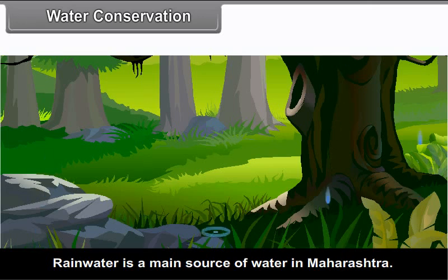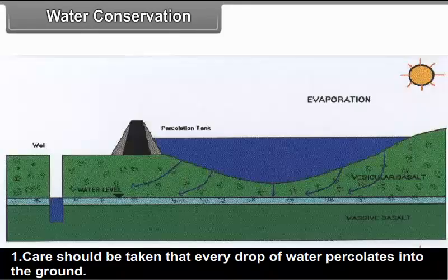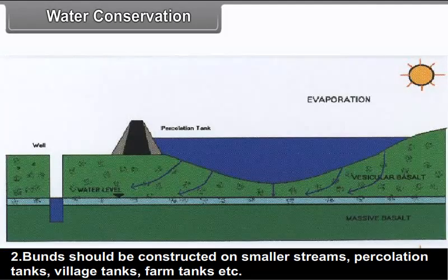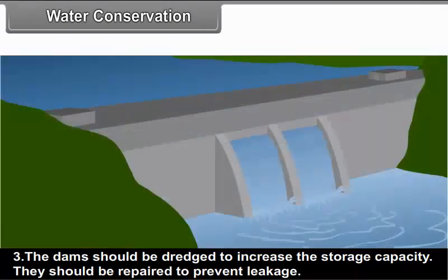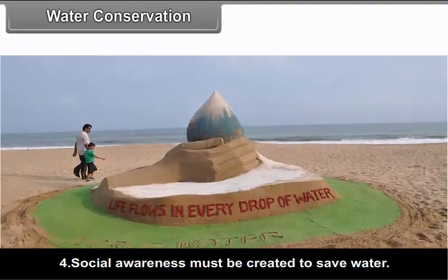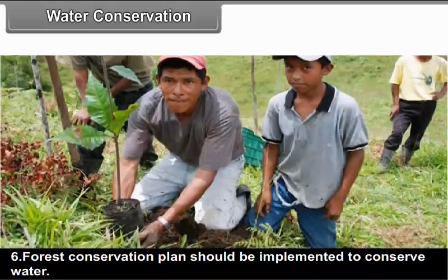Water conservation: Rain water is the main source of water in Maharashtra. Maximum area of Maharashtra is under drought prone area, so it is necessary to conserve water. Water can be saved by the following methods: 1. Care should be taken that every drop of water percolates into the ground. 2. Bunds should be constructed on smaller streams, percolation tanks, village tanks, farm tanks, etc. 3. The dams should be dredged to increase the storage capacity and repaired to prevent leakage. 4. Social awareness must be created to save water. 5. Rain water harvesting plan should be followed. 6. Forest conservation plan should be implemented to conserve water.